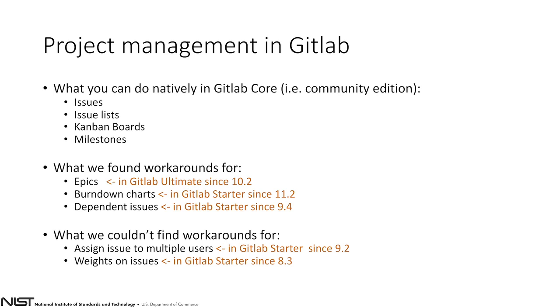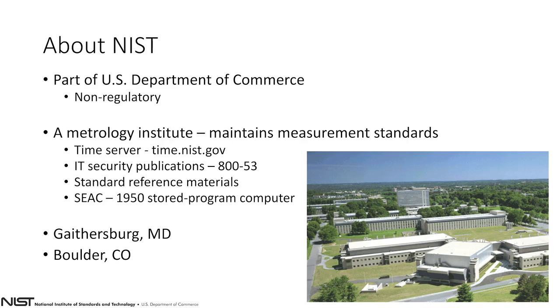What we weren't able to easily do, but we kind of found ways to sneak those in. And then what you really can't do for project management with GitLab Core. So what I'm going to show you is how we use issues, issue lists, Kanban boards, and milestones. We'll show you some workarounds we found that sort of work for epics, burndown charts, and dependent issues. And then we'll show you examples where we'd really like to assign issues to multiple users and weights on issues.